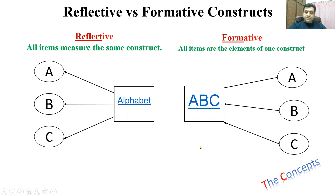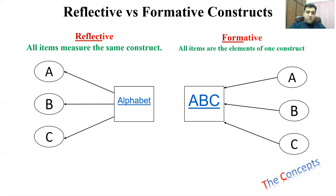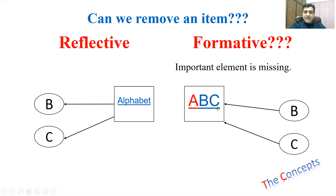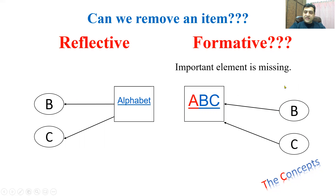Can we remove an item from these two types of constructs? If we remove an item from the reflective construct — say A is removed — it still does not alter or change its meaning, because B is also alphabet and C is also alphabet. But in the formative construct, if we remove one item, the construct is no longer complete. We cannot remove any item in formative constructs.